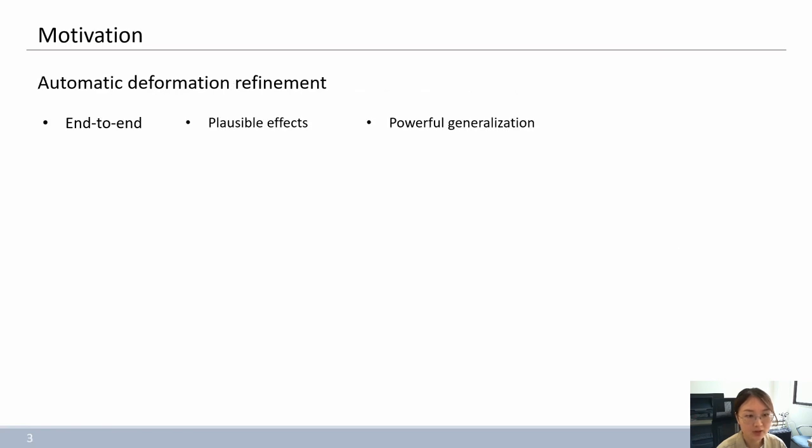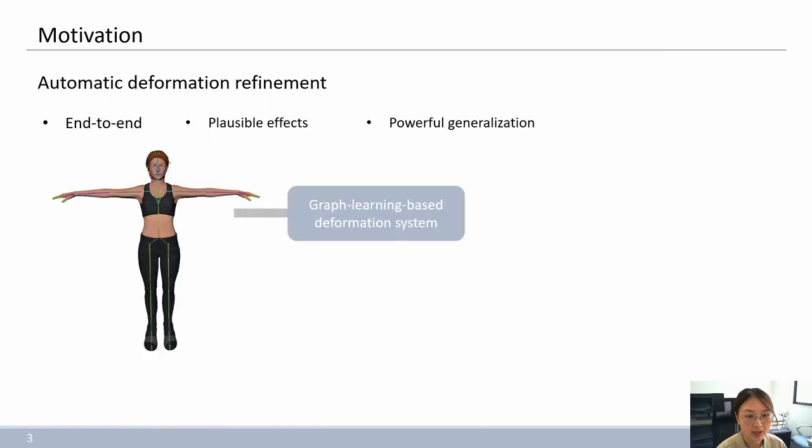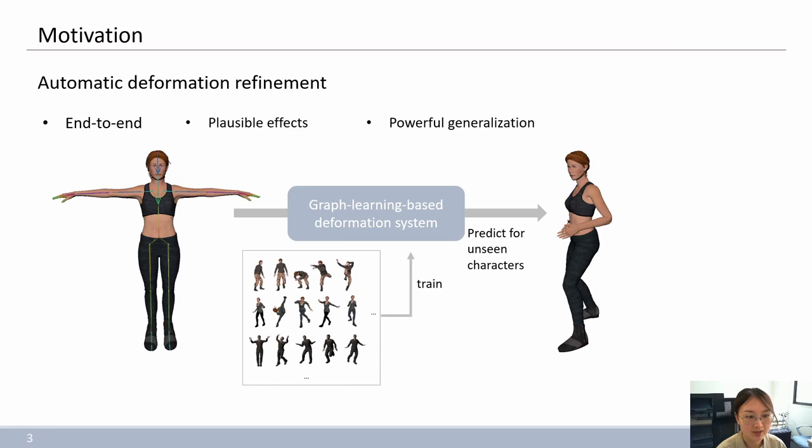In this work, our goal is to explore an integrated deformation system which can directly result in complicated deformations for new animated characters by learning from available artist-designed skinning features. This process is end-to-end that directly predicts offset adjustment in each pose step without the need of manual work.